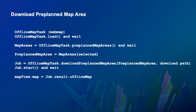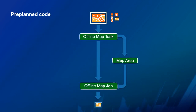The code for pre-planned: start with an offline map task initialized with the web map, find the available map areas, use those areas in a user experience — you get a thumbnail and description for each map area. Allow the user to select which one they want, download using 'download pre-planned map areas,' which returns a job. Monitor the job, and when complete, use the result as the map. The flow diagram: start with offline map task, user picks map area, download — very straightforward, a little simpler than on-demand.